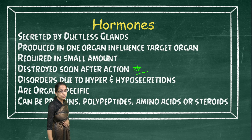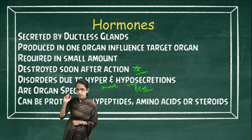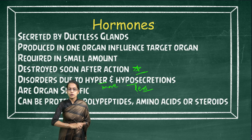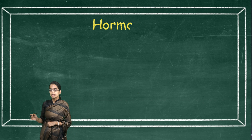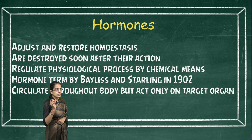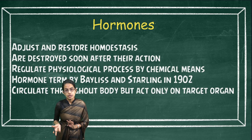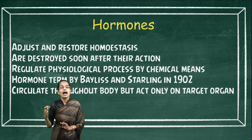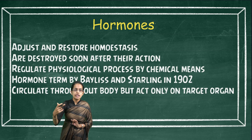So there are disorders due to hypersecretion, which is more secretion, or hyposecretion, which is less secretion. As mentioned, hormones are organ-specific — they act only on targeted organs. These hormones can be proteins, polypeptides, amino acids, or steroids in nature. Each target cell has a receptor, and their main purpose is to maintain homeostasis — to maintain and restore balance. As soon as a body feels deficient in something, hormone secretion increases to bring the body back to a routine cycle. This is known as the feedback mechanism.